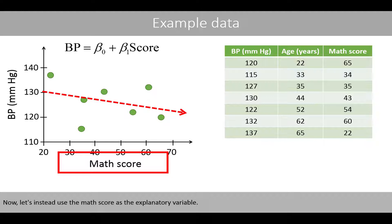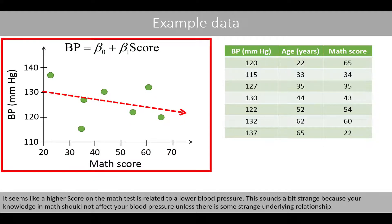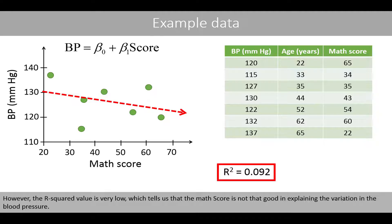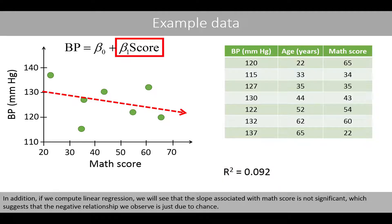Now let's instead use the math score as the explanatory variable. It seems like a higher score on the math test is related to a lower blood pressure. This sounds a bit strange because your knowledge in math should not affect your blood pressure unless there is some strange underlying relationship. However, the R-squared value is very low, which tells us that the variable math score is not that good in explaining the variation in the blood pressure. In addition, if we compute linear regression, we see that the slope associated with the variable math score is not significant, which indicates that the negative relationship we observe is just due to chance.